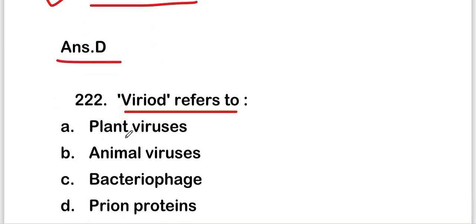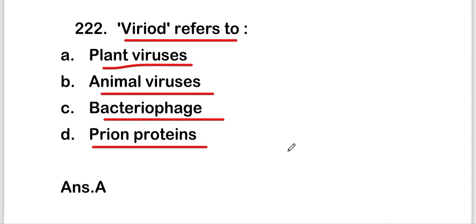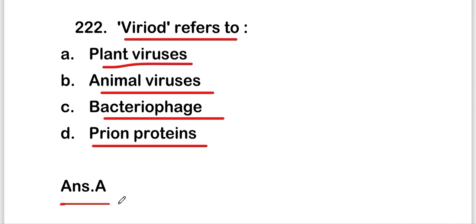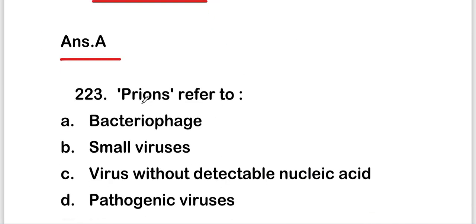Moving on to the next question: viroid refers to — plant viruses, animal viruses, bacteriophages, or prion proteins? The right answer is option A — plant viruses. Viroid refers to plant viruses.